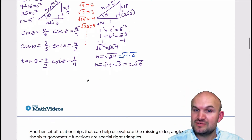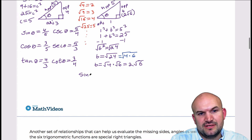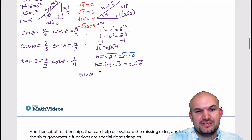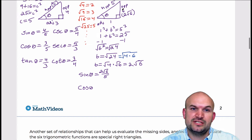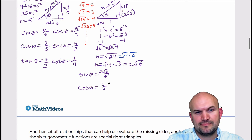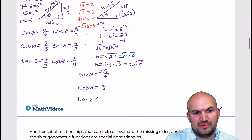Now let's fill in sine, cosine, and tangent. The sine of theta is opposite over hypotenuse, so that's two radical six over five — nothing to simplify there. The cosine of theta is adjacent over hypotenuse, so that's one over five. And the tangent of theta is opposite over adjacent, so that's two radical six over one, which is just two radical six.